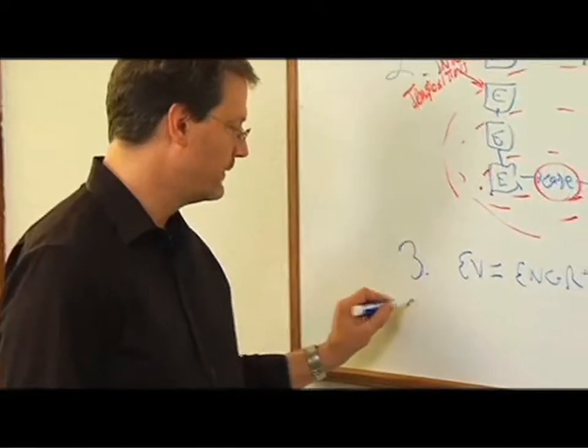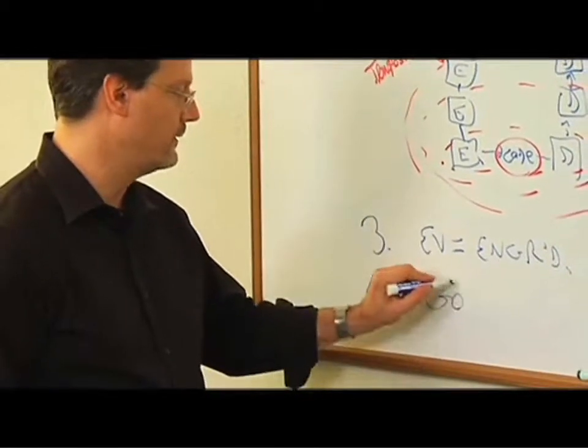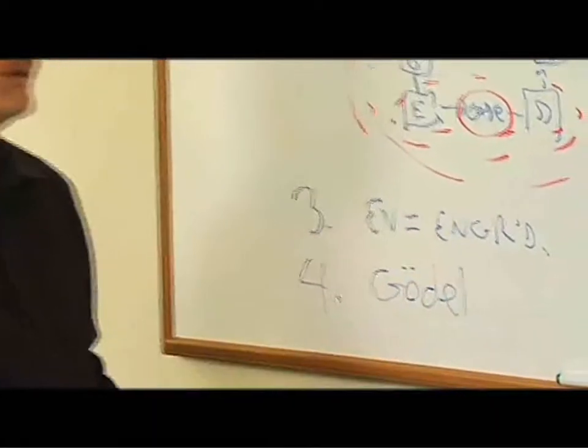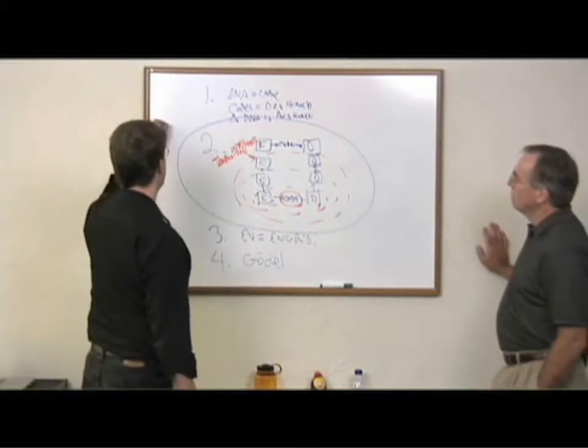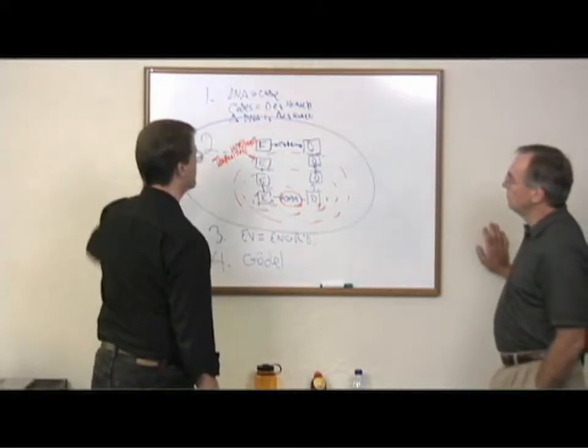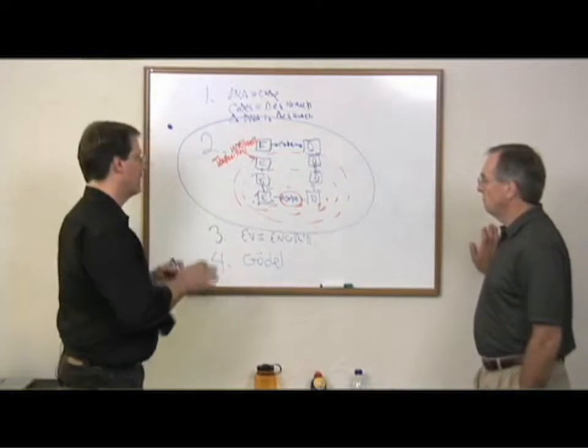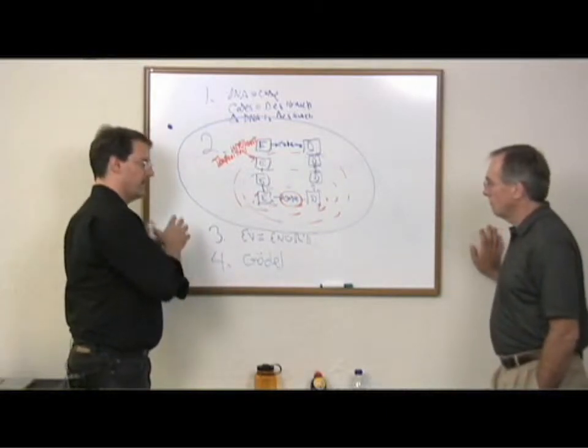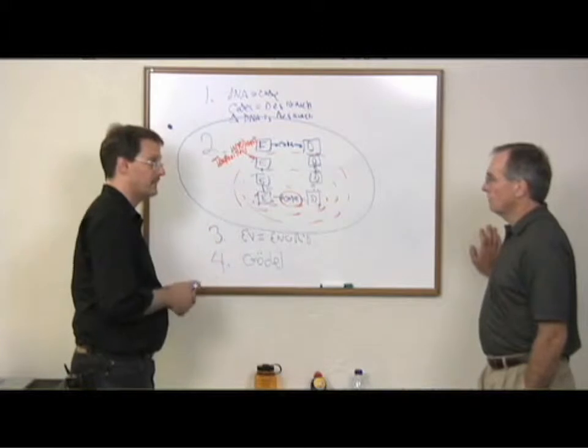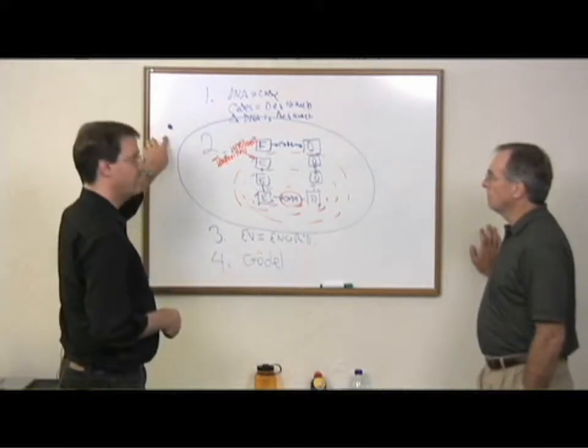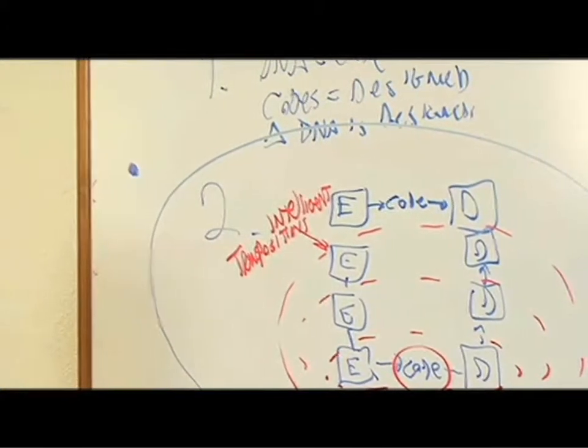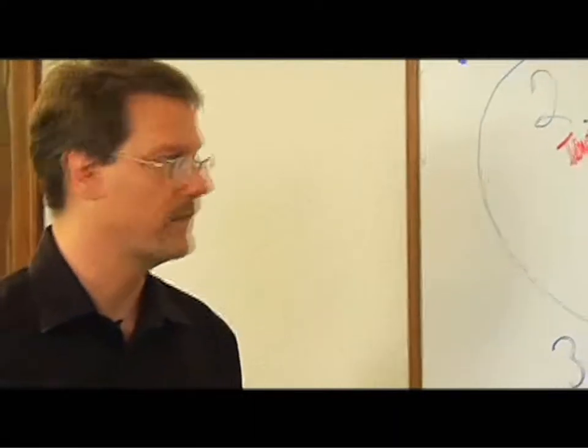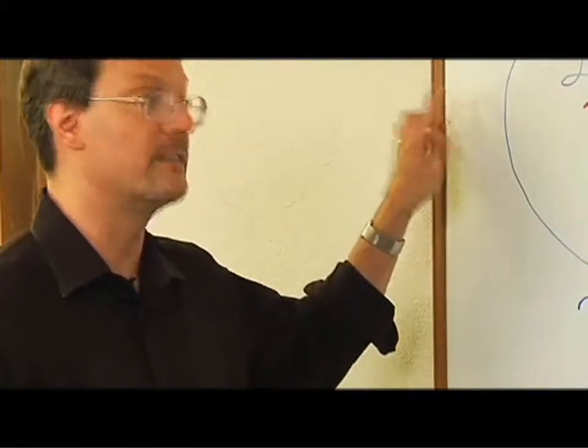Now number four, we went to Kurt Gödel and his incompleteness theorem, and we said anything you can draw a circle around relies on something outside the circle that you have to assume that you cannot prove. So we can come up with one set of understandings just from matter, energy, space, and time: that what's outside the universe that caused the universe is not matter, not energy, not space, not time, and not a system. It's a spirit. It's spirit, it's metaphysical.